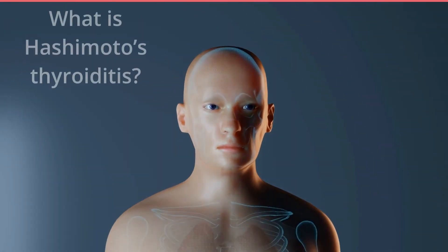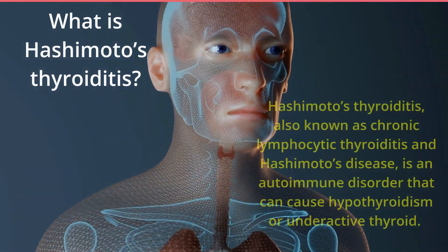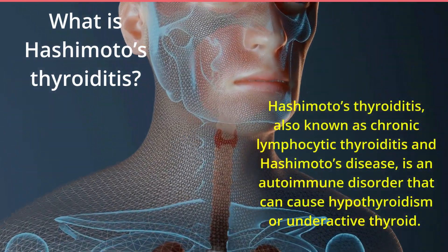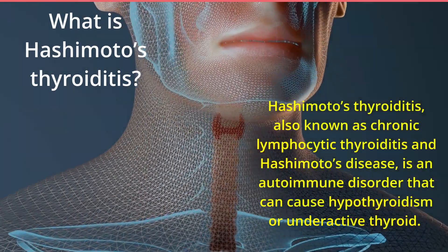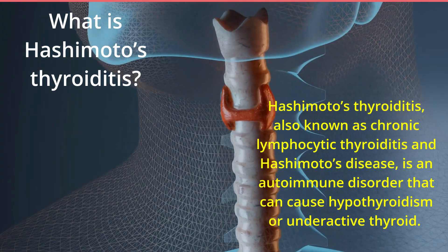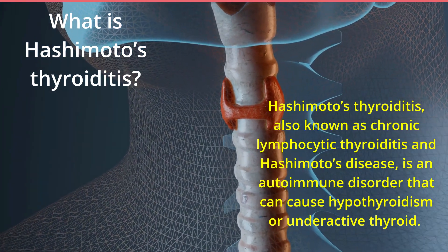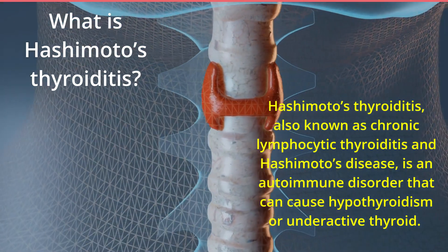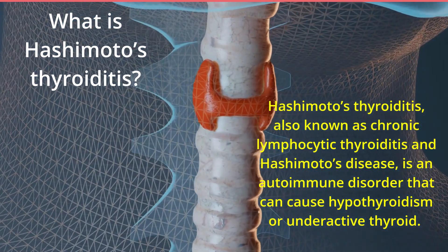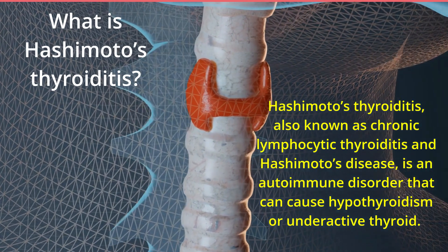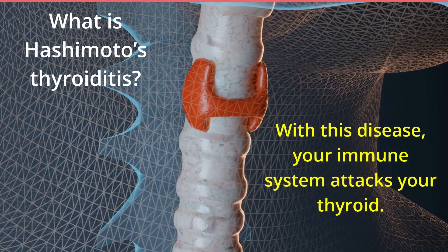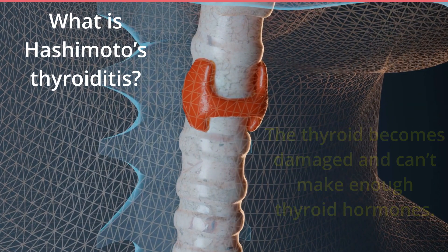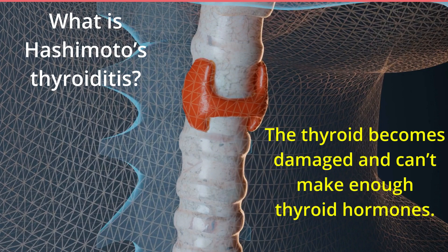What is Hashimoto's Thyroiditis? Hashimoto's Thyroiditis, also known as chronic lymphocytic thyroiditis and Hashimoto's disease, is an autoimmune disorder that can cause hypothyroidism, or underactive thyroid. With this disease, your immune system attacks your thyroid. The thyroid becomes damaged and can't make enough thyroid hormones.